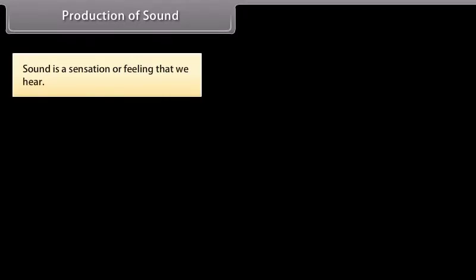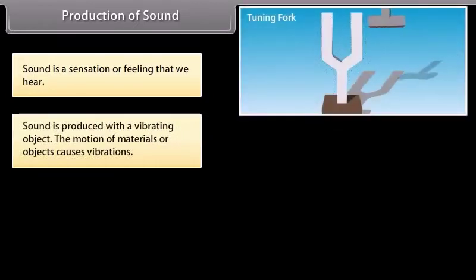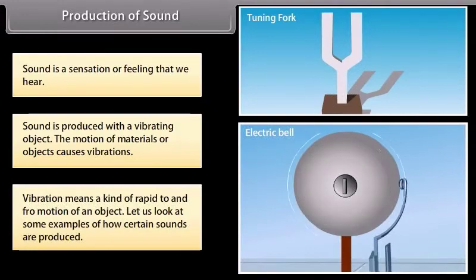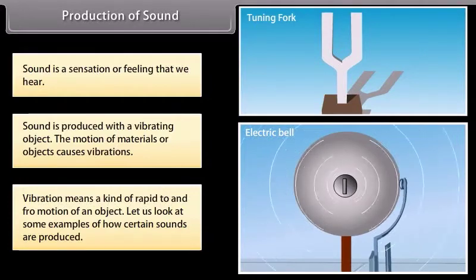Production of sound. Students, we know that sound is a sensation or a feeling that we hear. Sound is produced with a vibrating object. The motion of materials or objects causes vibrations. Vibration means a kind of rapid to and fro motion of an object. Let us look at some examples of how certain sounds are produced.